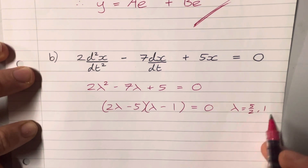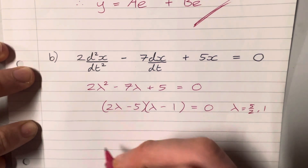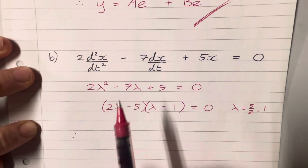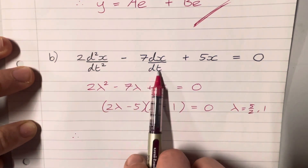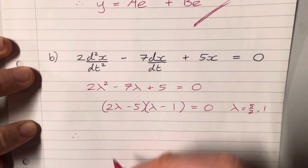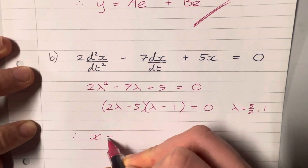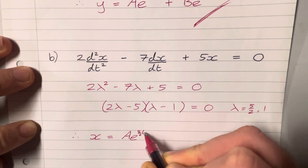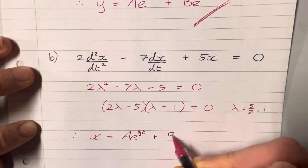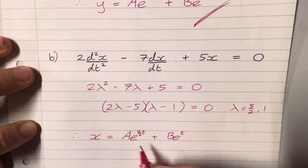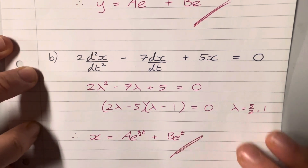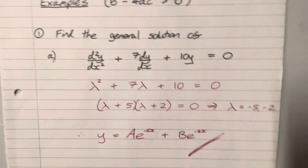That gives us lambda values of 5/2 and 1. Once we've spotted that these two lambda values are distinct and real, we can jump straight to the general solution. Note that this one has x's and t's, so x is a function of t: x equals A e to the 5/2 t plus B e to the t. You could also leave that as A e to the 2.5t.